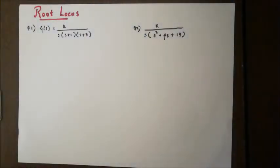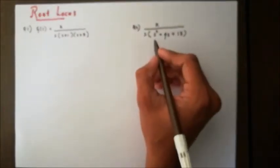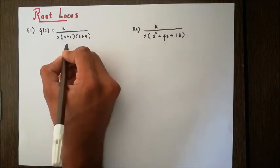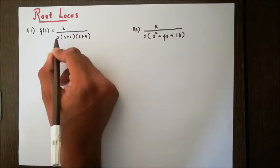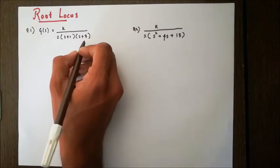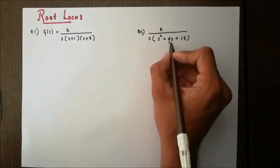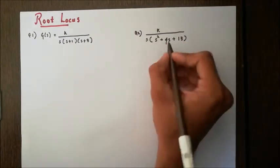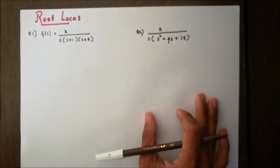Hello everyone, this is Edunek. In this lecture we are going to learn how to plot the root locus of a given open loop transfer function. I am going to discuss two different types of questions: one in which we have all real poles where the denominator is completely factorizable, giving real poles such as s = 0, -1, and -3; and another where the denominator is not factorizable and we get complex poles.